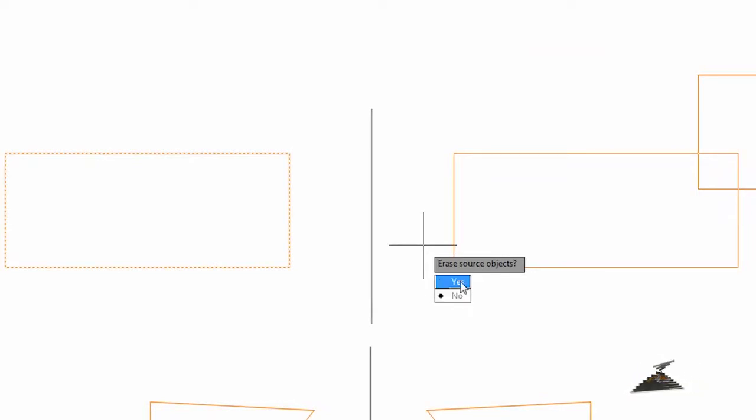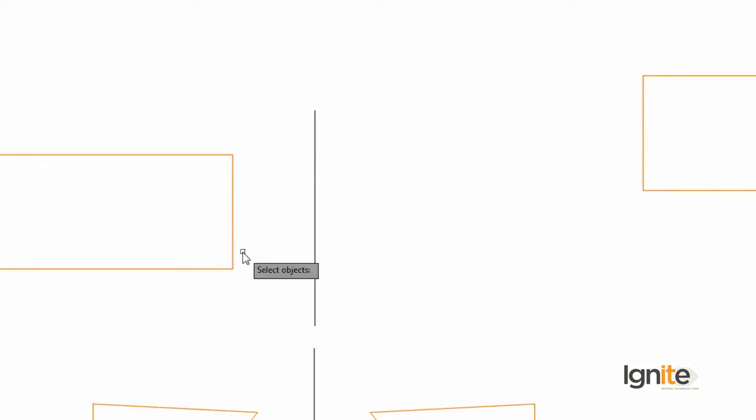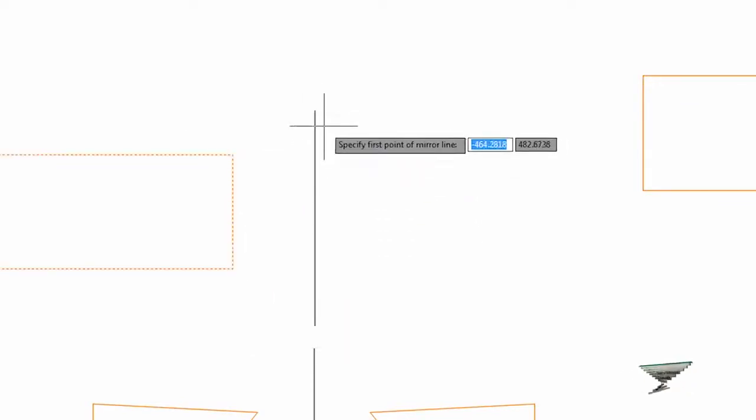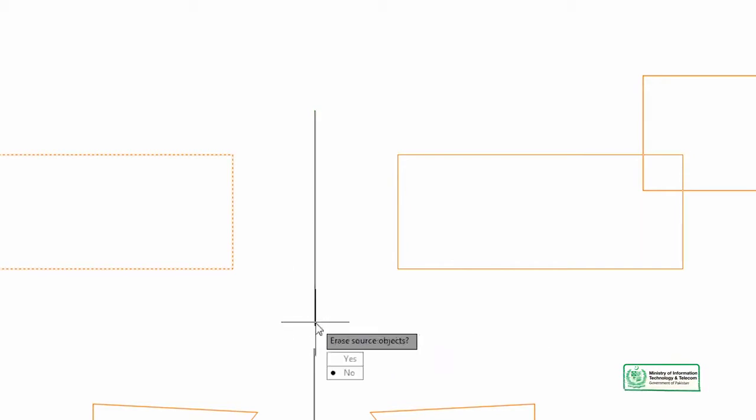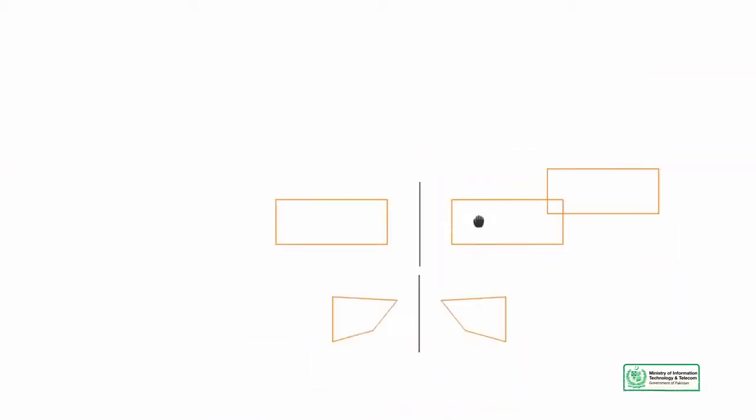M and source object — if you want to delete the source object, then the first object will be deleted and the new rectangle will be drawn. So in this way we can enter the mirror command — MI — simple. So we can create any line we need.